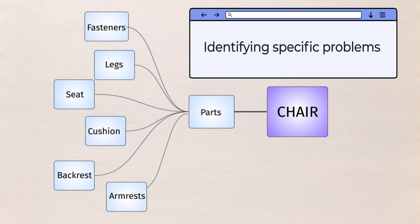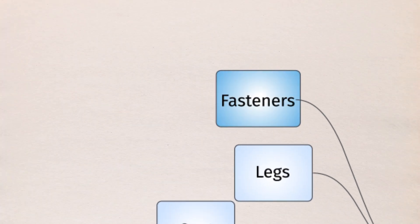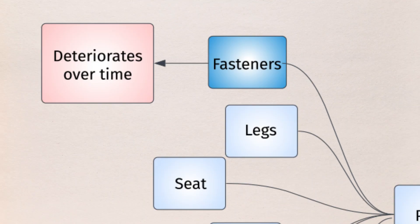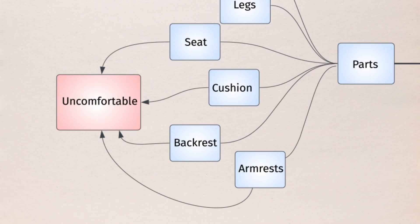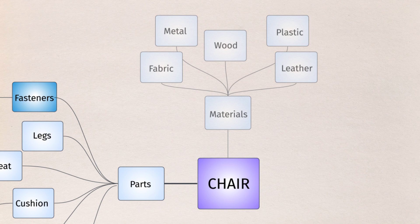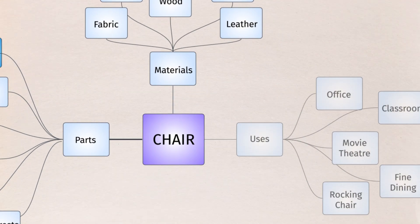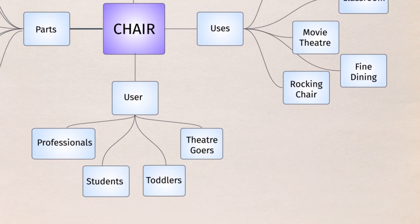At this point, you might start identifying specific problems about the parts of the chair. For example, fasteners can deteriorate over time, and many parts of a chair can be uncomfortable. Next, you might move on to list the materials that make up a chair, add its uses, and even the user type.